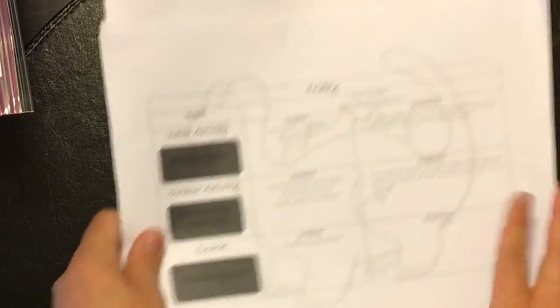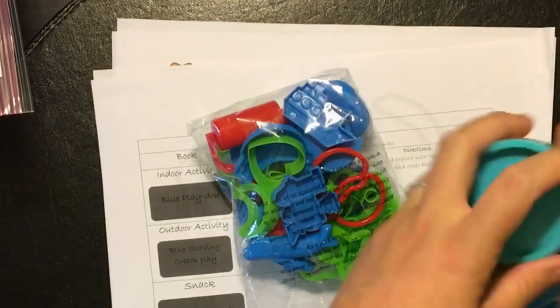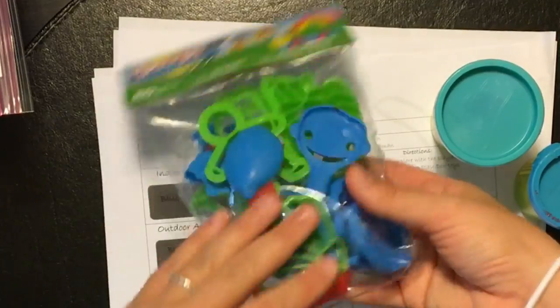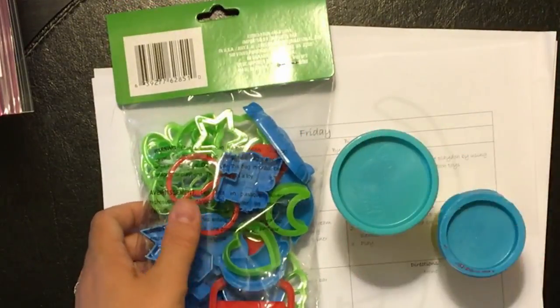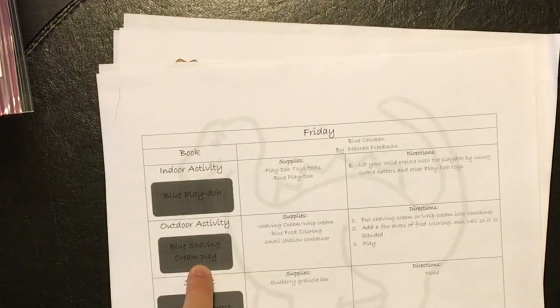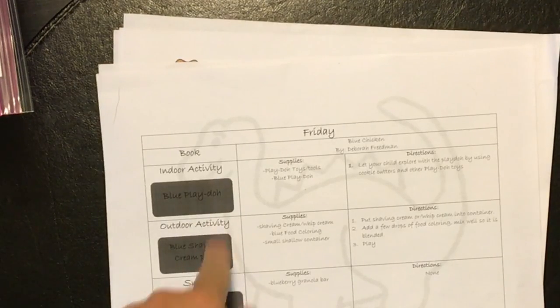And then Friday, our indoor activity is blue play-doh. And I bought these little play-doh things for him to show him how to do the cookie cutters and how to play with play-doh. And then our outdoor is blue shaving cream play, and I might actually change this to whipped cream because I got the idea. I've seen where you can do whipped cream.